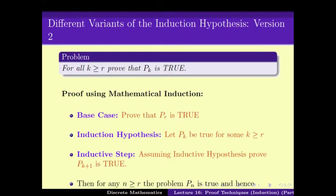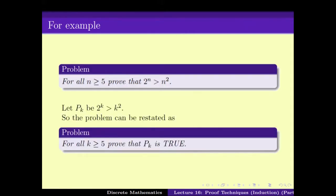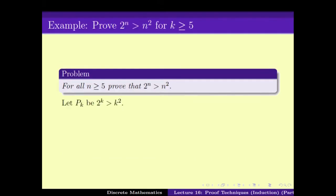The idea is similar — we have the real line, here is R, and we want to prove Pr is true, then Pr+1 is true, and so on. The only difference is that you have to change the base case. So the base case here becomes that Pr — the Rth case — is true. The induction hypothesis is that Pk is true for some k ≥ R, and then we use the inductive step to prove Pk+1 is true.